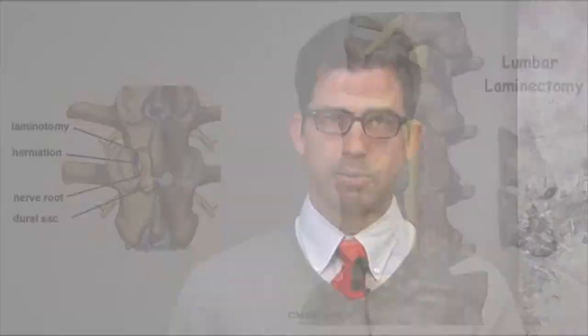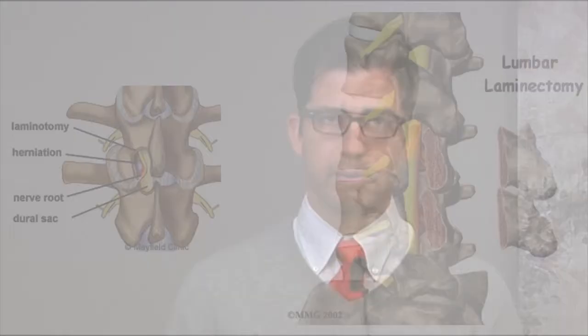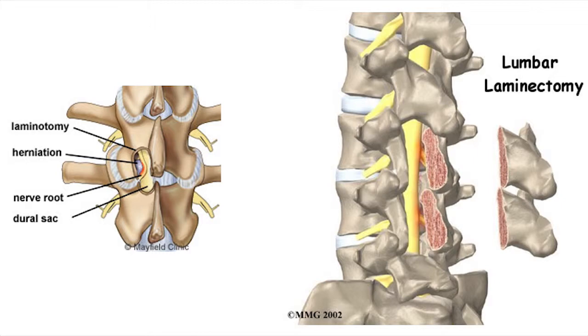This is done to achieve better visualization without causing instability to the spine — referred to as a laminectomy or laminotomy. Once we visualize the lamina, which is the posterior bony structure above the spinal nerves, the disc is visualized and the nerve roots are protected while we remove the disc fragment causing pressure. This is usually done under magnification using either a microscope or loupe magnification glasses in the operating room.